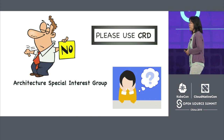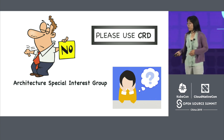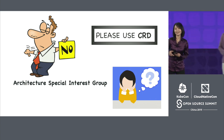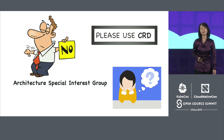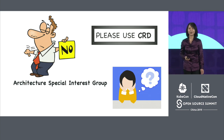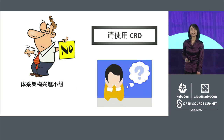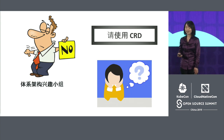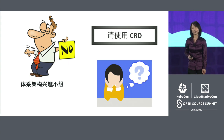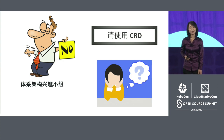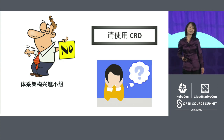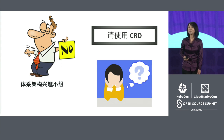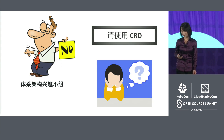We worked very hard trying to change their mind. We tried many different ways trying to prove that the Snapshot API should stay in-tree and that SIG architecture was wrong. But after many rounds of discussions, we finally changed our own minds and agreed with the decision.